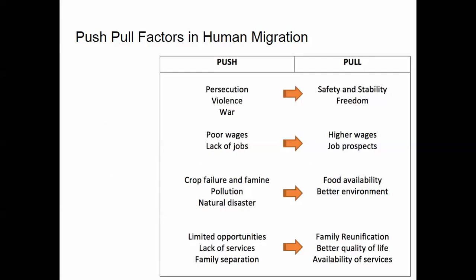When we talk about human movement, we need to understand that people move or migrate for different reasons. For the quiz, make sure you understand these: there are what we call push and pull factors. Push factors are those things that drive someone out of their land of residence. Pull factors are things that draw people towards a new home. Push factors, for example, are things like persecution for various reasons, violence in the home country or home region, war. Push factors can also be poor wages or no jobs, and poor wages can also get associated with inflation.